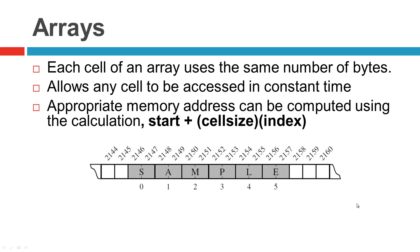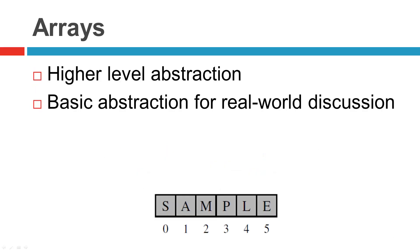That's the low-level thinking, but usually we're thinking on a higher level of abstraction, which is what we'll use for real-world discussions. When we're discussing interview problems, we really won't be talking about bits and bytes. We'll be talking at the higher abstraction level — we just say we have the 'sample' string and the indexes are 0, 1, 2, 3, 4, and 5. We won't be worrying about cell size or bytes per element.